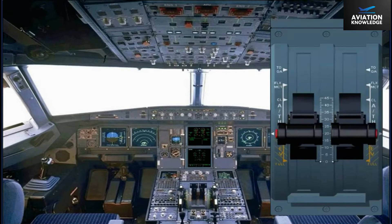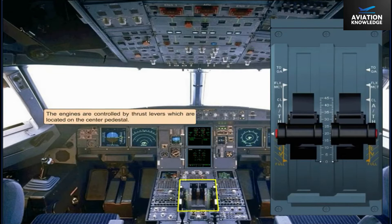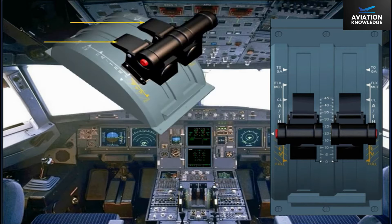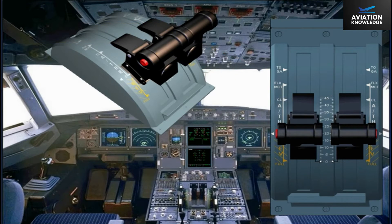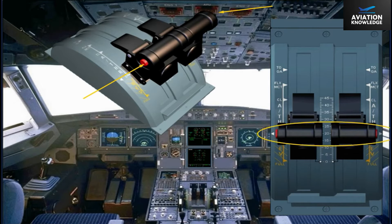The engines are controlled by thrust levers, which are located on the center pedestal. The autothrust can be disconnected with either of these red push buttons, which are called instinctive disconnect push buttons.